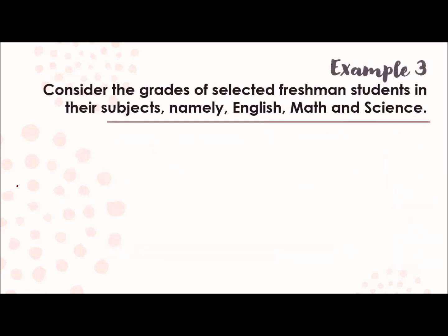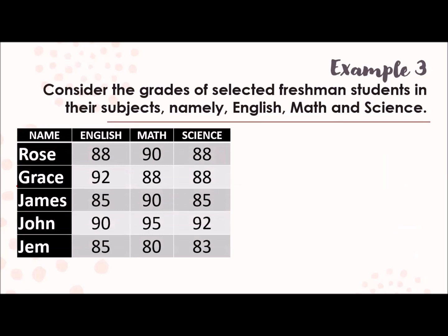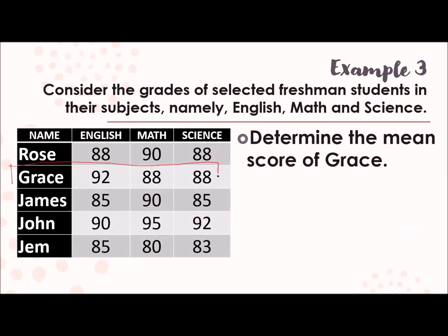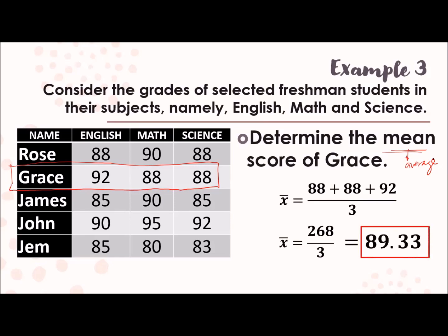Next one. Let's have these scores or these grades coming from the freshman students. We have here the grades of Rose, Grace, James, John, and Jem in English, Math, and Science. Let's analyze this data using these questions. Determine the mean score of Grace. So that means, we'll look at only Grace's grades. Which are 92, 88, and 88. And the question is mean. That means, we're going to get the average. So you just take that. 88 plus 88 plus 92 divided by 3, because there are only three scores. That will become 268 divided by 3, which is now 89.33. So that is now the mean for Grace for the three subjects.